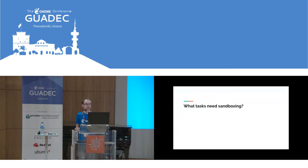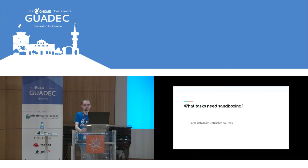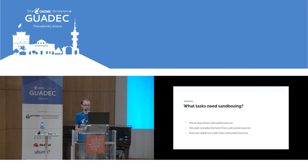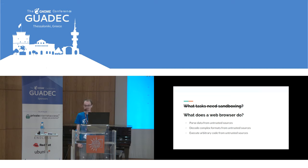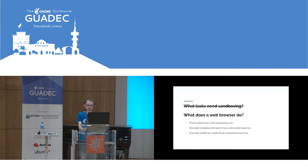As a recap, what tasks are dangerous and need sandboxing? Anything that parses data from untrusted sources, like LibXML or LibRSVG, are common exploits. Decoding complex formats like video, audio, and image files, and executing arbitrary code like game emulators. Those are all things a web browser does, and a web browser is probably the most important target on your desktop when it comes to security — it does tons of very dangerous things connecting to many untrusted sources.